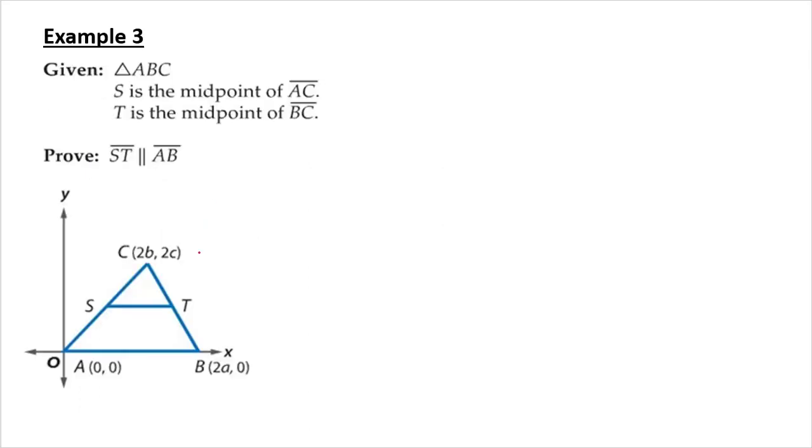So now a coordinate proof. We have triangle ABC. S is the midpoint of AC. T is the midpoint of BC. I need to prove that ST is parallel to AB. To prove things are parallel, you could prove angles congruent. But proving angles congruent is going to be challenging, because you need to know a little bit more algebra here. What you do need to prove is we could prove that those have the same slope.